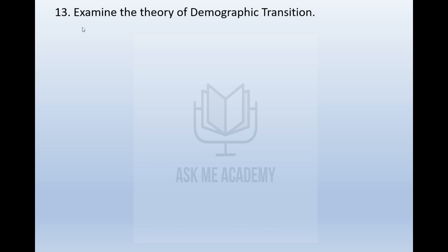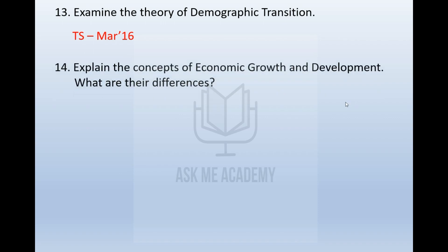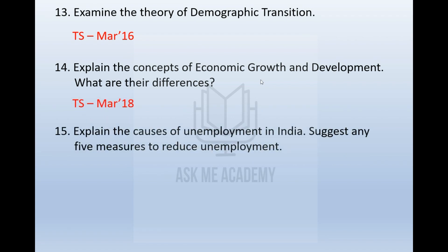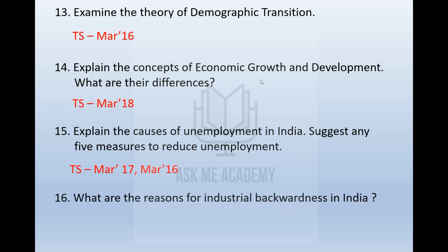The next question is: examine the theory of demographic transition — asked once. Then, explain the concepts of economic growth and development and their differences — asked once. The next question is: explain the causes of unemployment in India and suggest any 5 measures to reduce unemployment — asked twice. The last question is: what are the reasons for industrial backwardness in India — asked once.